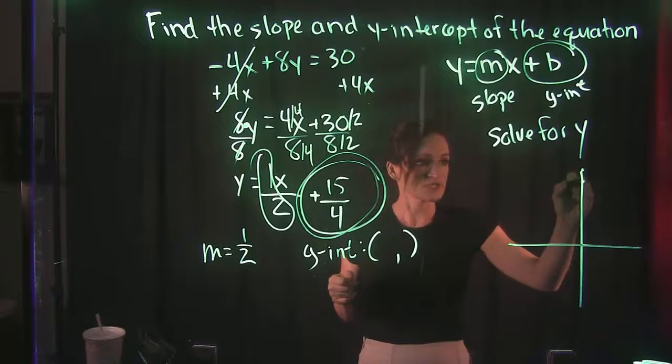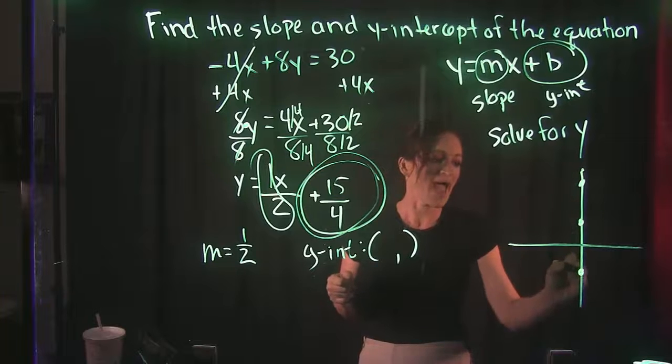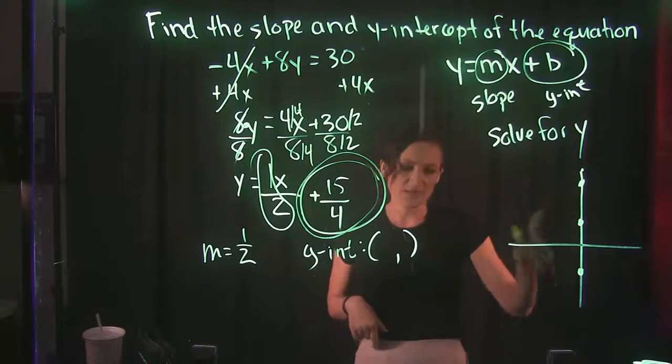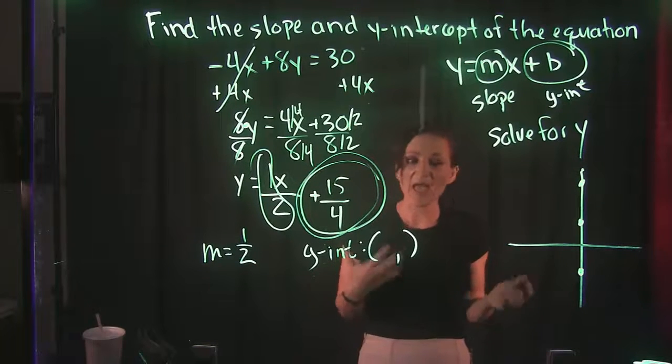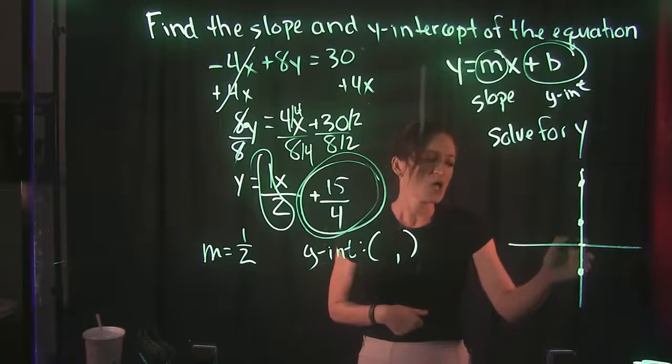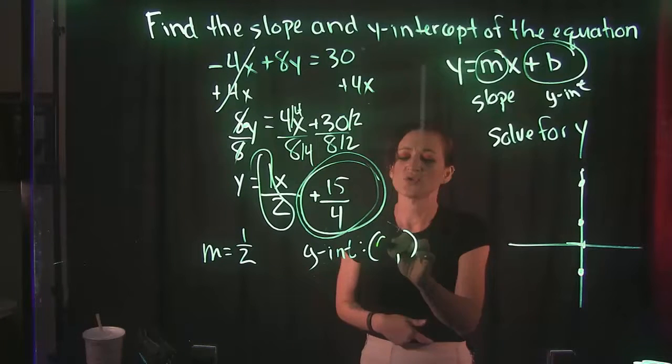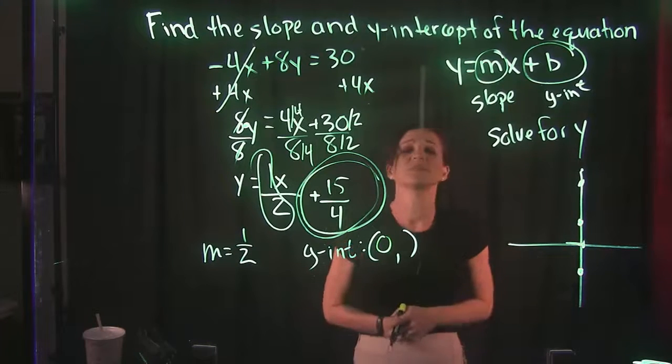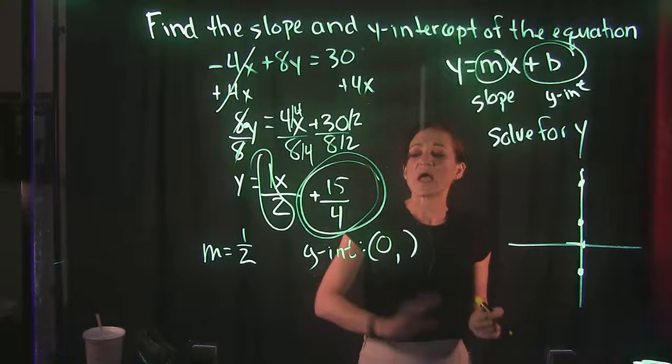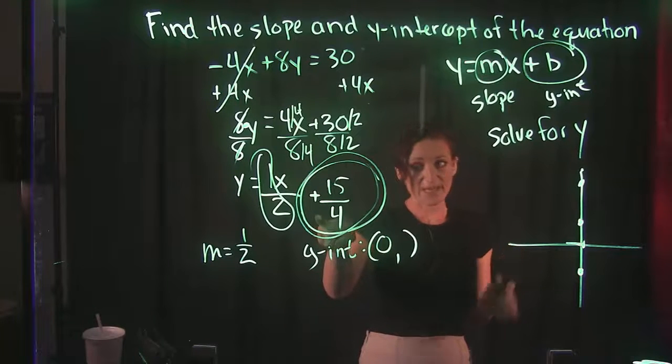When we have a y-intercept, it's a point that's on the y-axis. And any point that is on the y-axis is going to have a zero for the x-value. Because you wouldn't move left or right, but you go straight up and down and plot that point. So the x-value is always going to be zero.